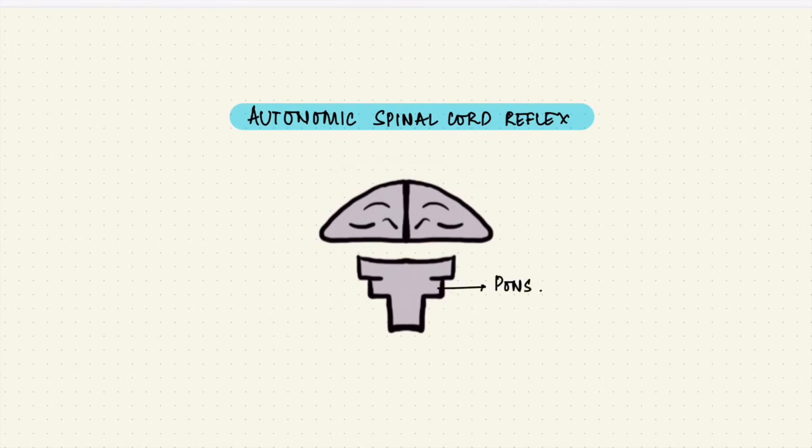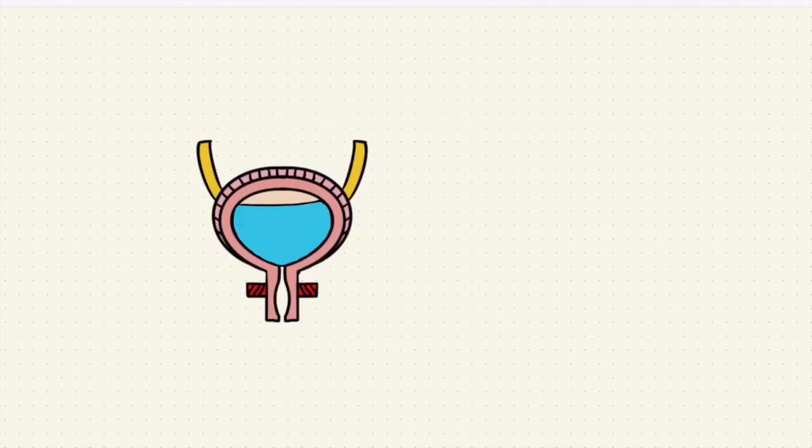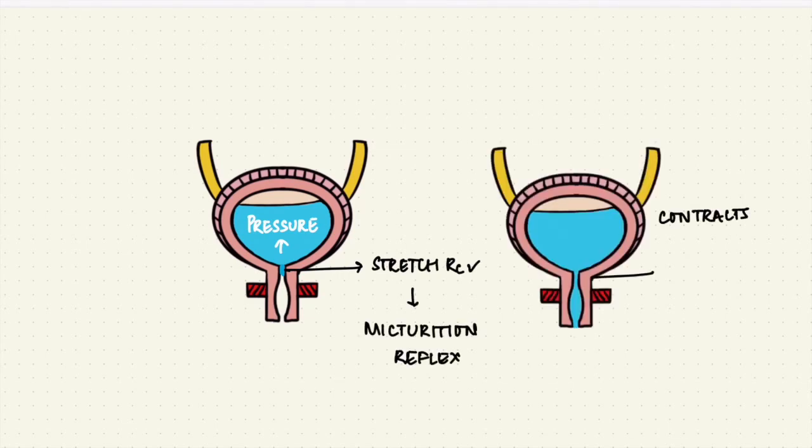The pontine micturition center, the PMC, by default, it tries to trigger the voiding reflex. The cortex has an inhibitory influence on the PMC, until the situation is appropriate. So for voluntary micturition, the brain releases its inhibitory effect on the pons. There's contraction of the abdominal muscles, which causes the bladder pressure to rise. The urine enters the posterior urethra under pressure. The stretch receptors get stimulated, followed by the reflex resulting in the contraction of the detrusor, relaxation of the internal sphincter, and simultaneous relaxation of the external sphincter, causing emptying.